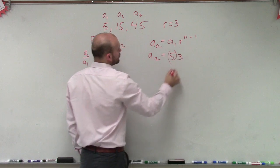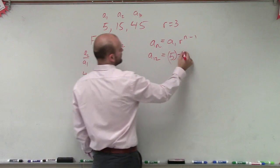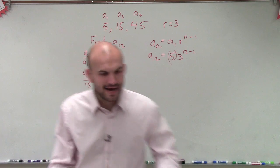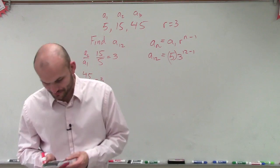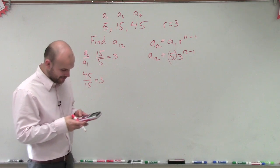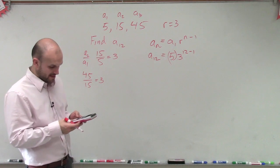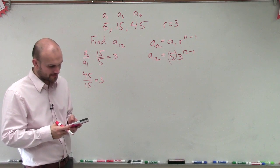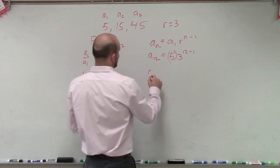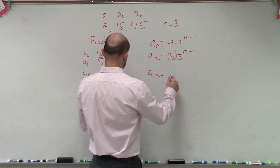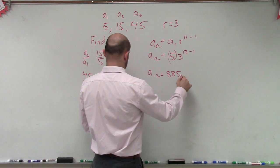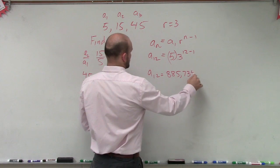So I take my hot pink calculator, and I do 3 raised to the 11th power, and then multiply that times 5. And I get a_12 equals 885,735.